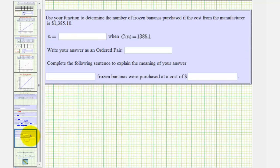The last part, we want to use the function to determine the number of frozen bananas purchased if the cost from the manufacturer is 1,385 dollars and 10 cents, which means we want to find n when c of n is equal to 1,385.1. So using our function, we'll substitute 1,385.1 for c of n and solve for n.